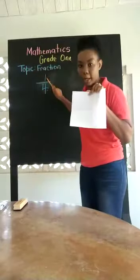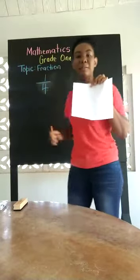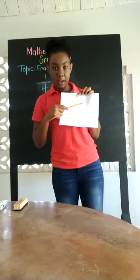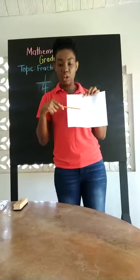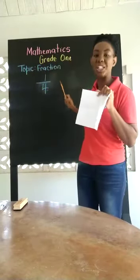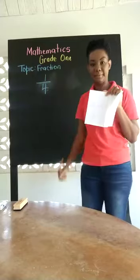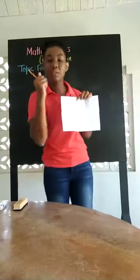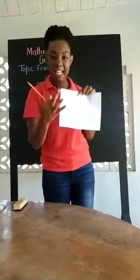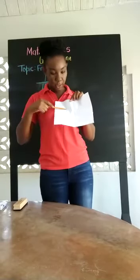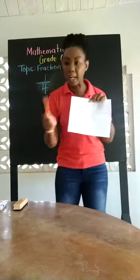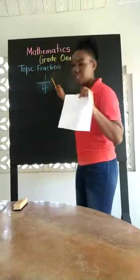Only one. If I have shaded one quarter of my page, how many quarters are unshaded? We have three quarters that are unshaded at the moment. Let us count them: one, two, three. And one that is shaded.